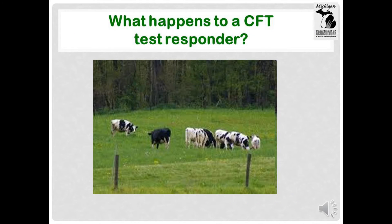There are two different tests that may be used on cattle that respond to the CFT: the comparative cervical test, known as the CCT, and the gamma interferon test. Both tests compare the response to different kinds of TB. The CCT involves injecting the animal in the neck area, while gamma interferon is a blood test. The CCT requires two visits to the farm by our regulatory veterinarian, but the results are immediately available on the second visit. The gamma interferon test requires only one visit by the veterinarian, but the sample must be shipped to the laboratory and may take up to 10 days for results and interpretation. Only one of these tests may be used at a time in a herd.